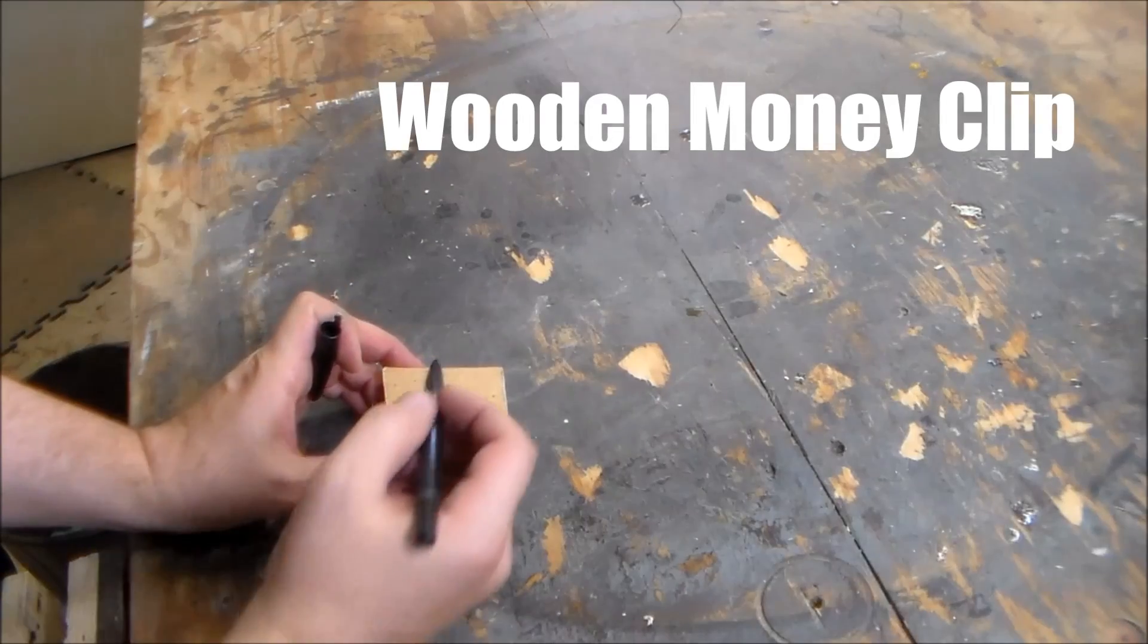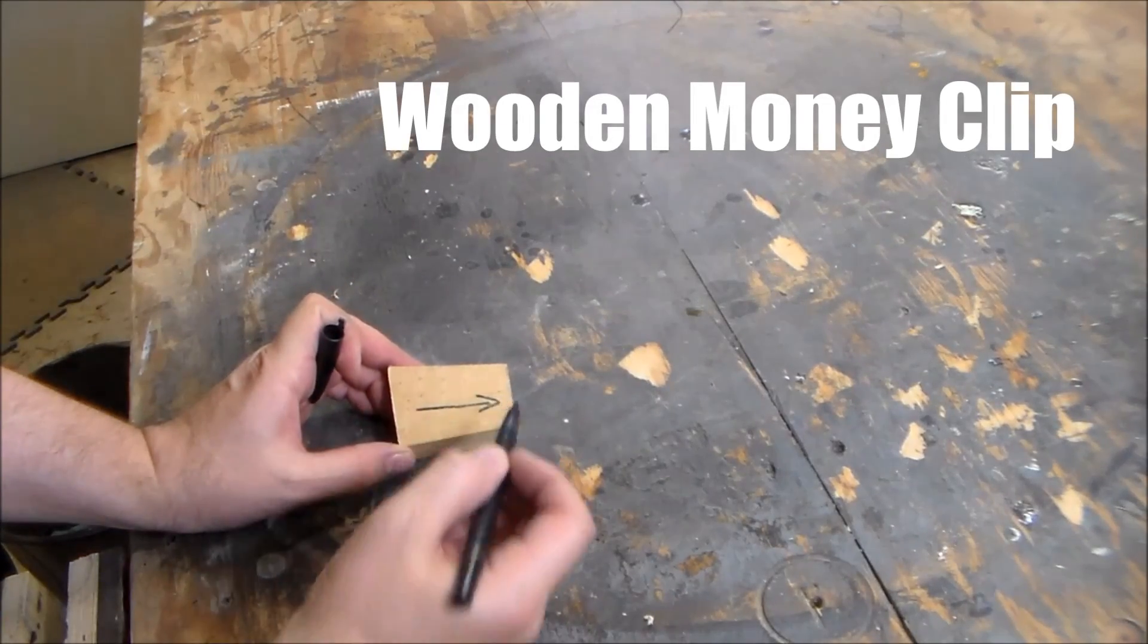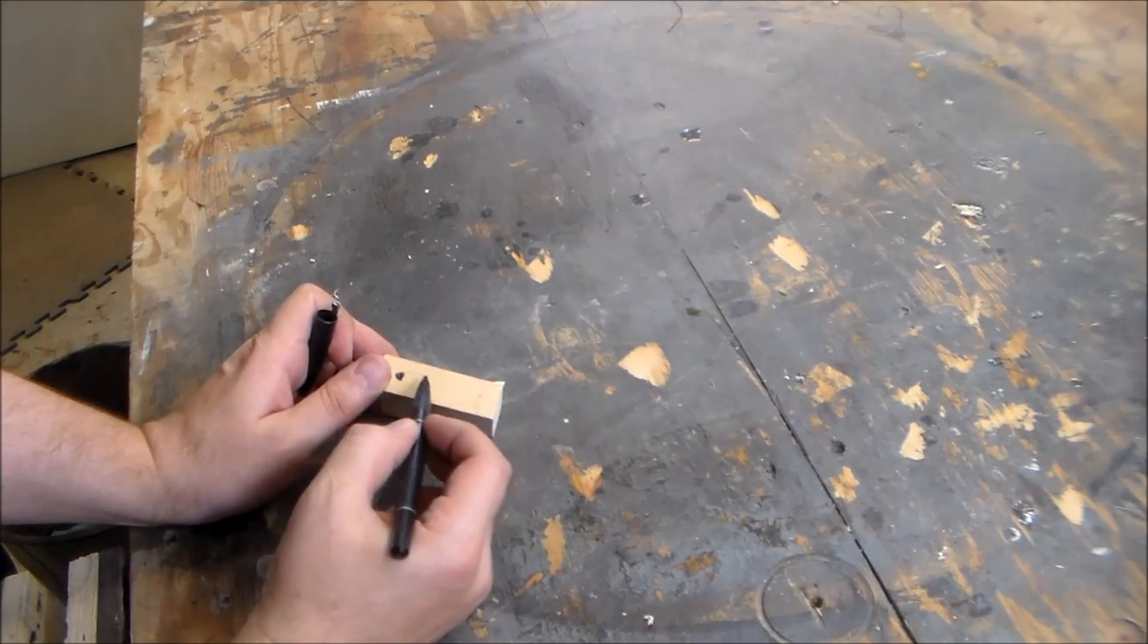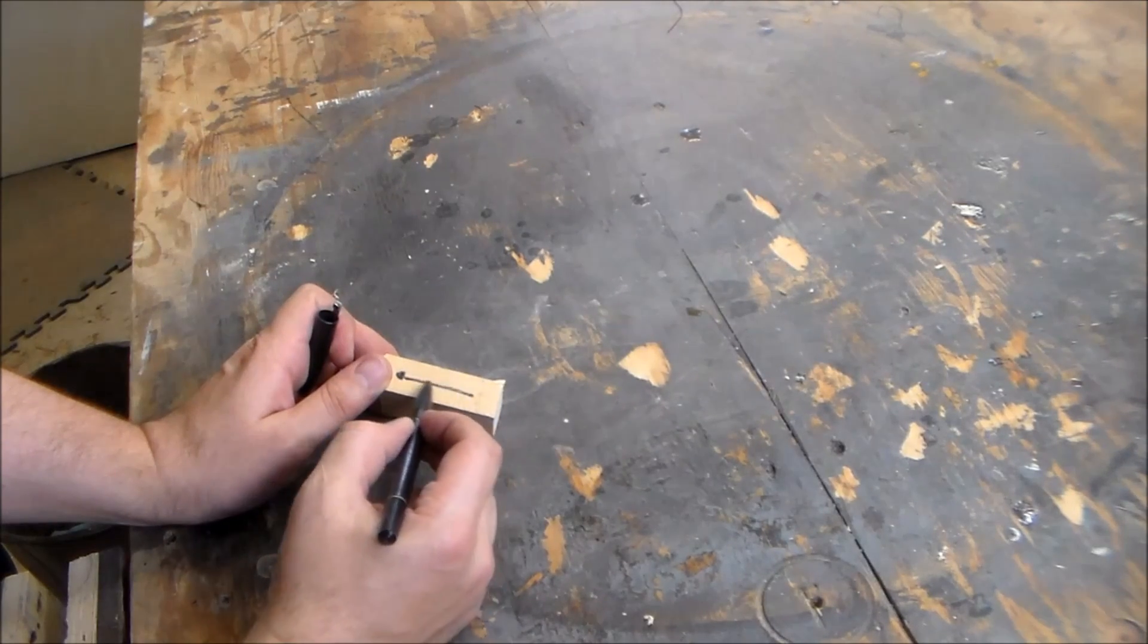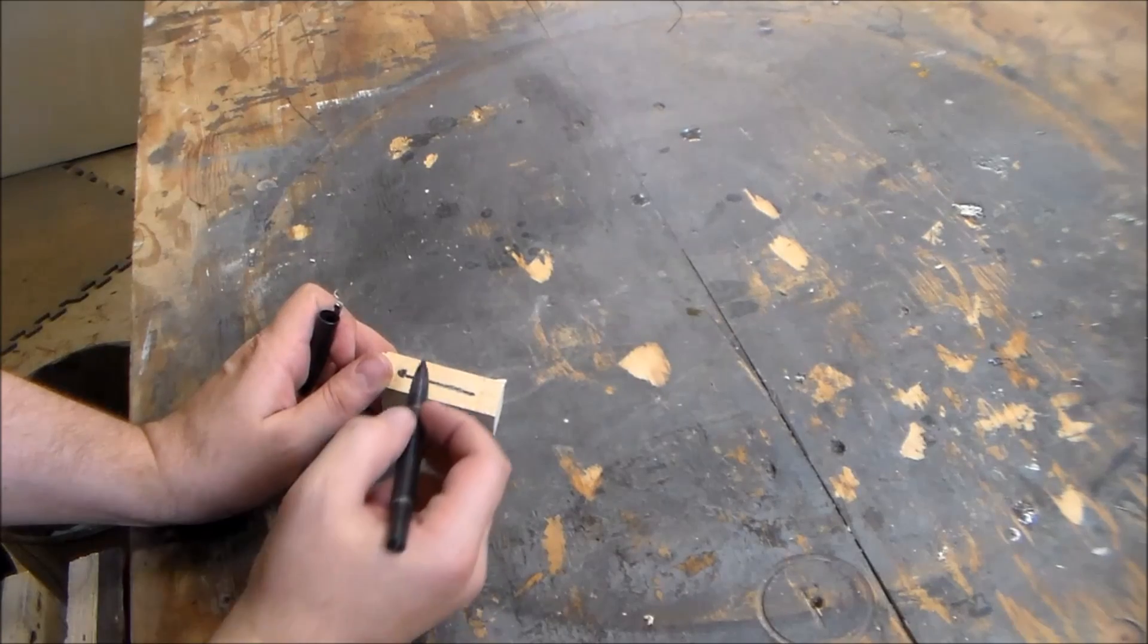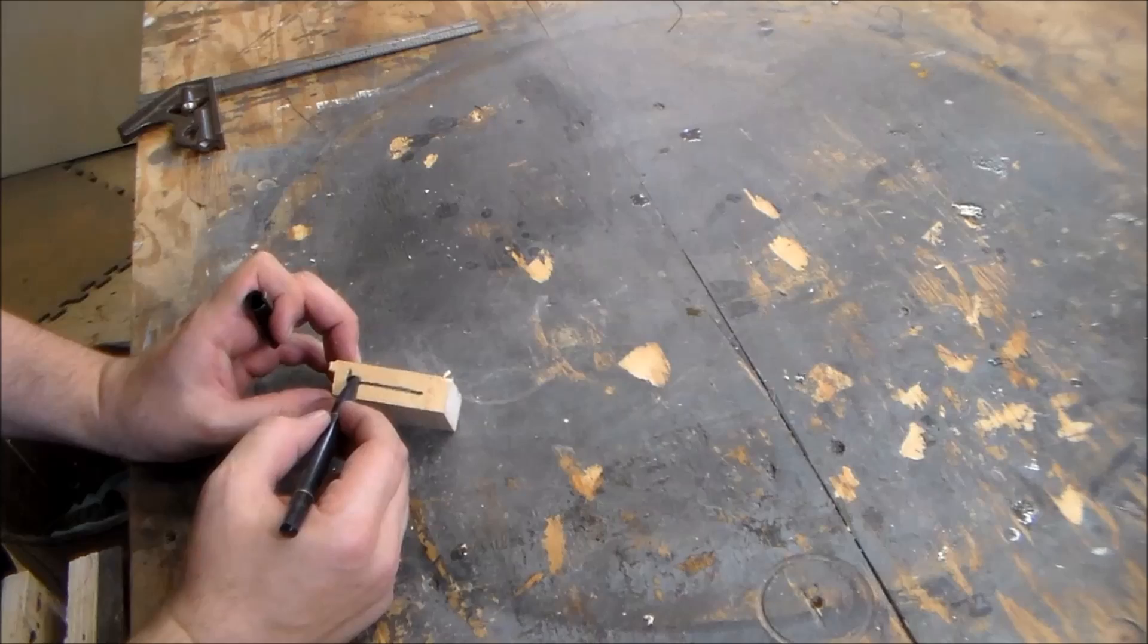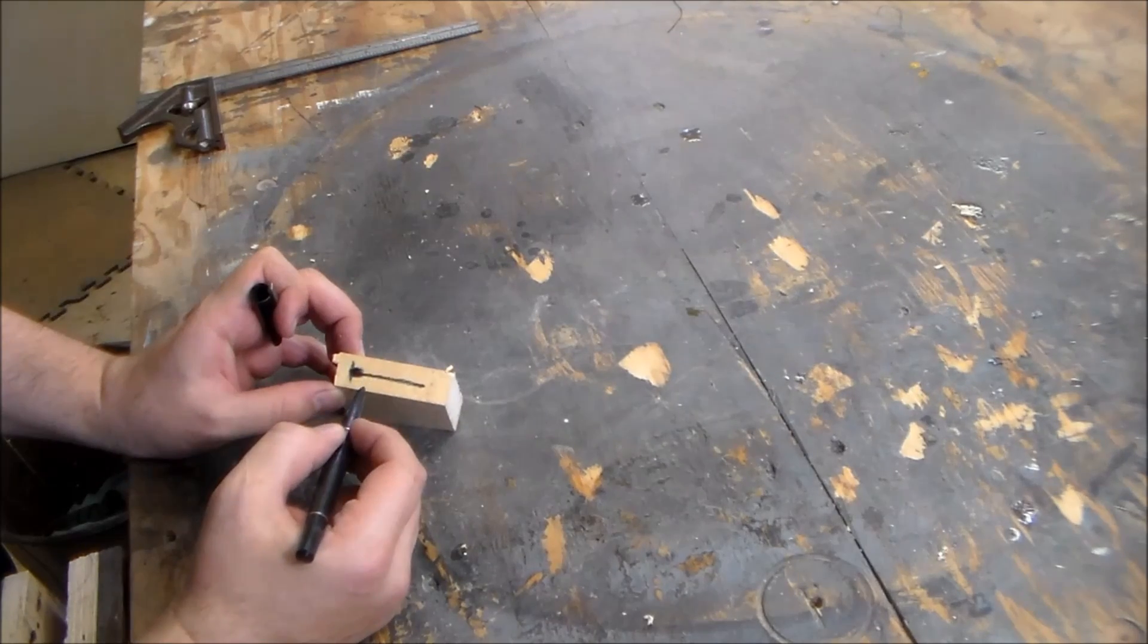You want a piece that has the grain going in the right direction, so that when you drill your hole and cut the slot for your money, you don't have a weak point here at the joint. And I think I'm going to use a quarter inch bit for that.